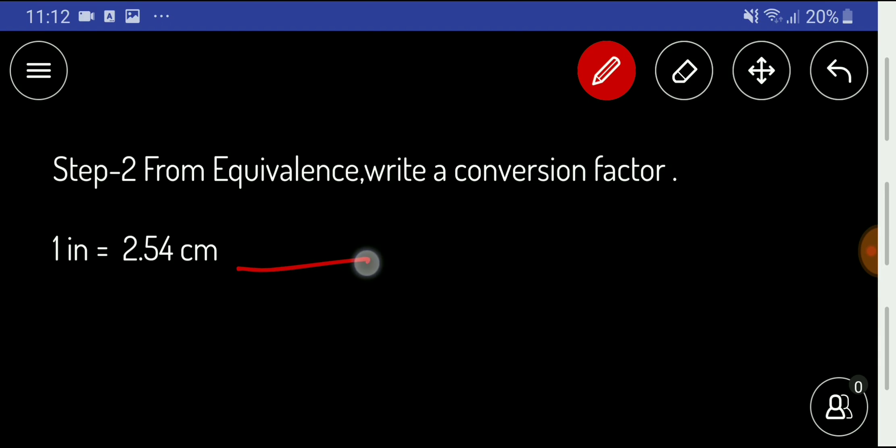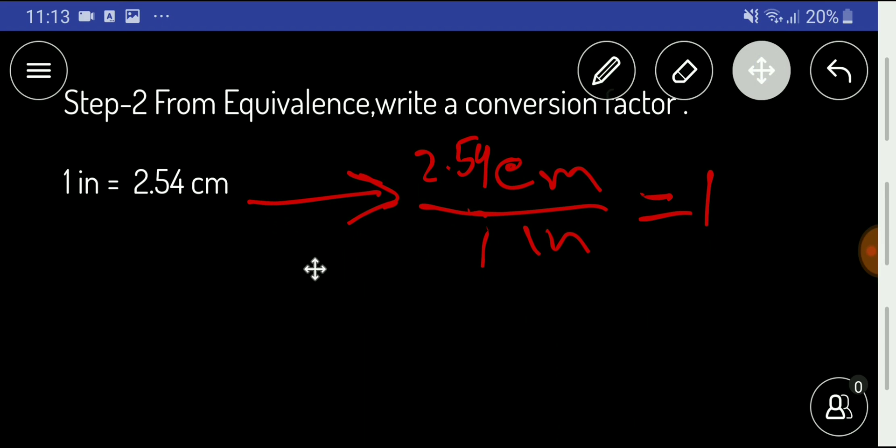The first one: we can consider centimeters as the numerator, so 2.54 centimeters over 1 inch, and this will equal one. We can also write another conversion factor.